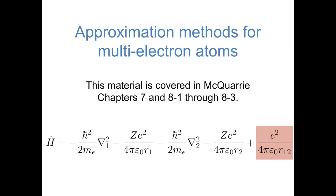Hi everybody. In the previous two videos, we solved for the orbitals and the energies of a hydrogen atom. In this video, I'd like to think about how we can use quantum mechanics to at least approximately solve for multi-electron atoms.